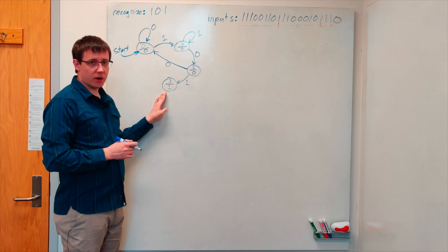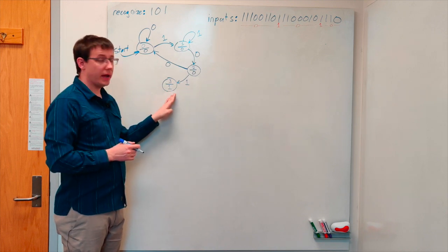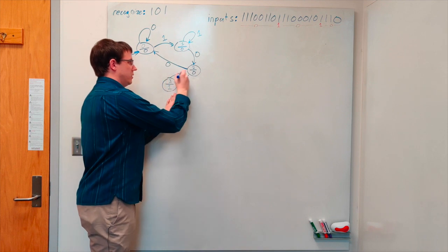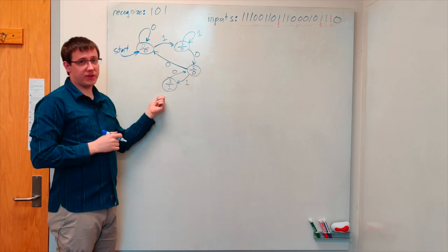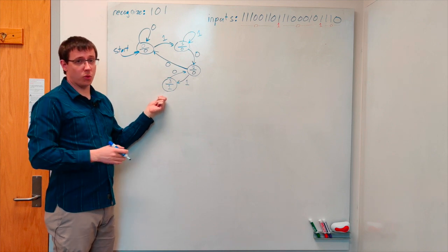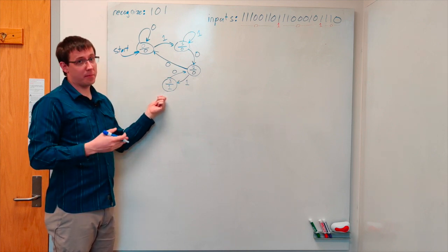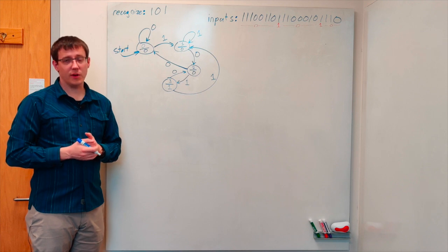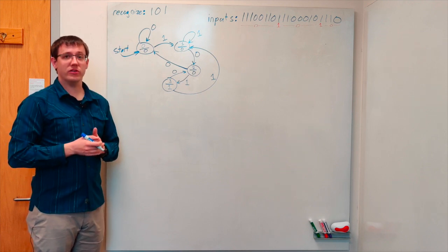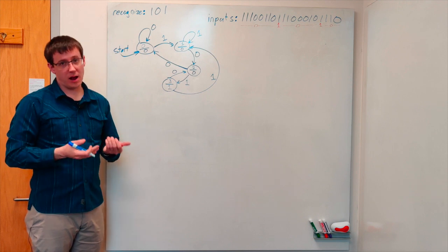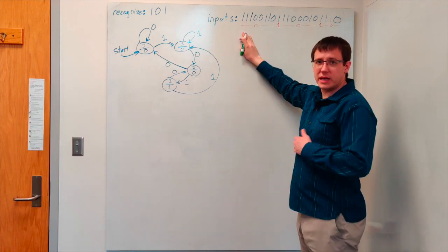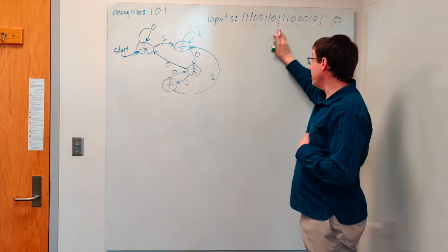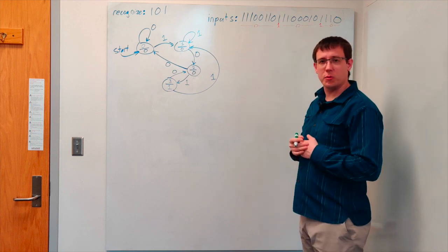From state three, if we see a zero, then our last two inputs were a one and then a zero, and so we should go back to the state that represented having just seen a one and a zero, which was state two. On the other hand, if we see a one from this state, then the only progress we have towards the subsequence one, zero, one is that most recent input, and so we should go back to state one. Now we have a complete finite state machine that will output one whenever its most recent three inputs were one, zero, one, and output zero otherwise.